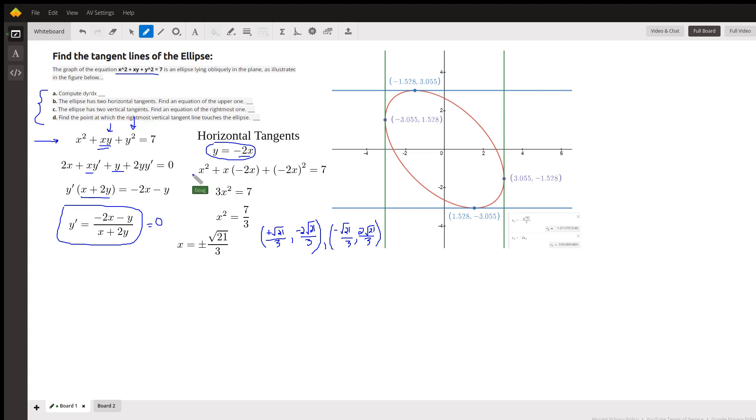Substituting negative 2x wherever you see a y, we get 3x squared after you square this and combine similar terms equals 7. X squared equals 7 thirds, so x equals plus or minus the square root of 21 over 3 if you choose to rationalize the denominator, otherwise it's plus or minus the square root of 7 thirds.